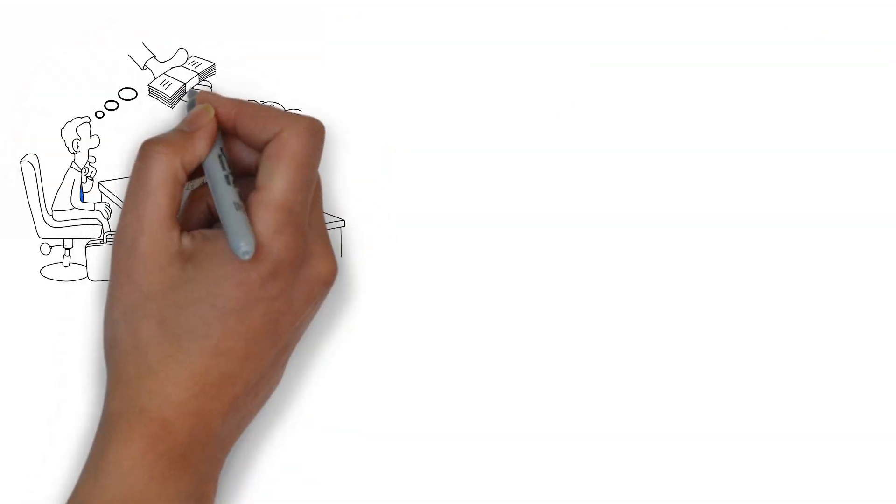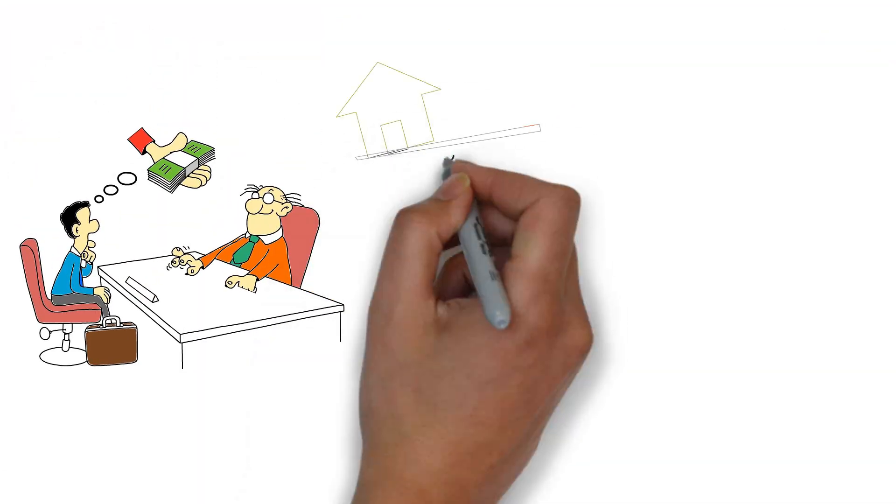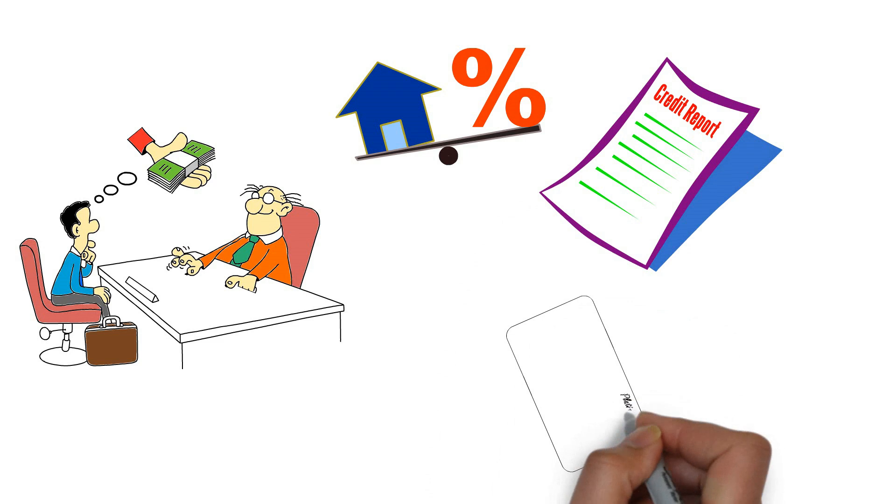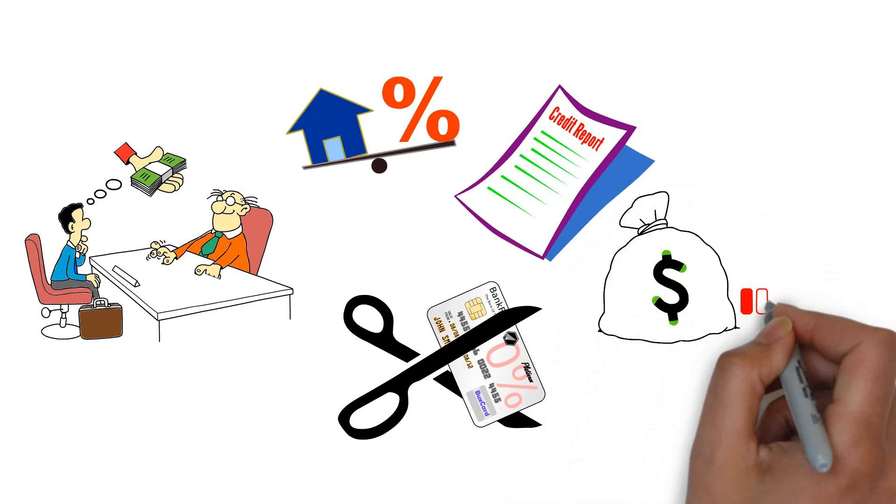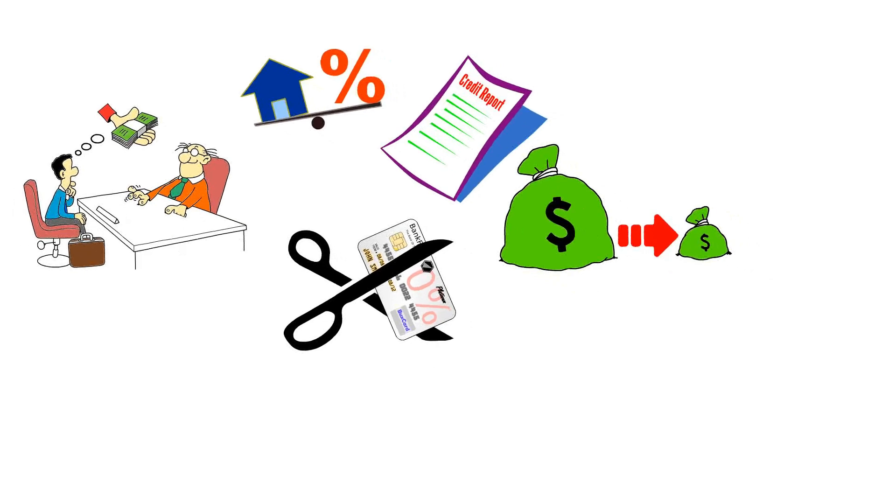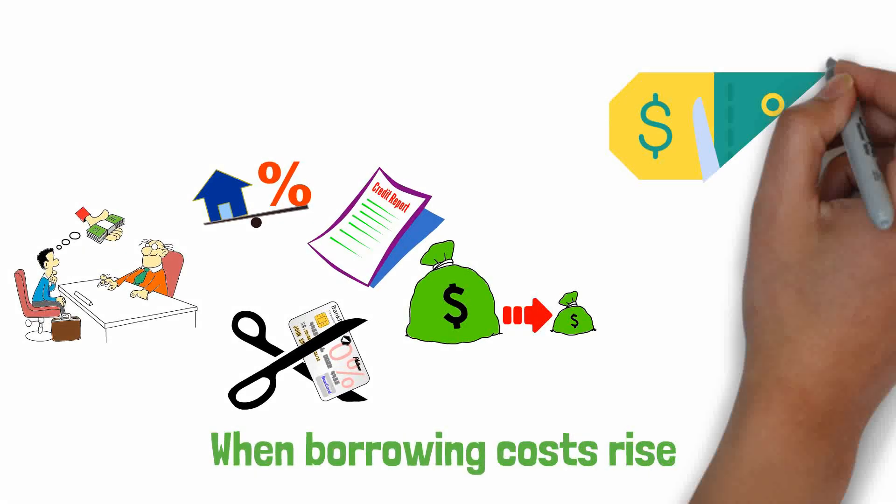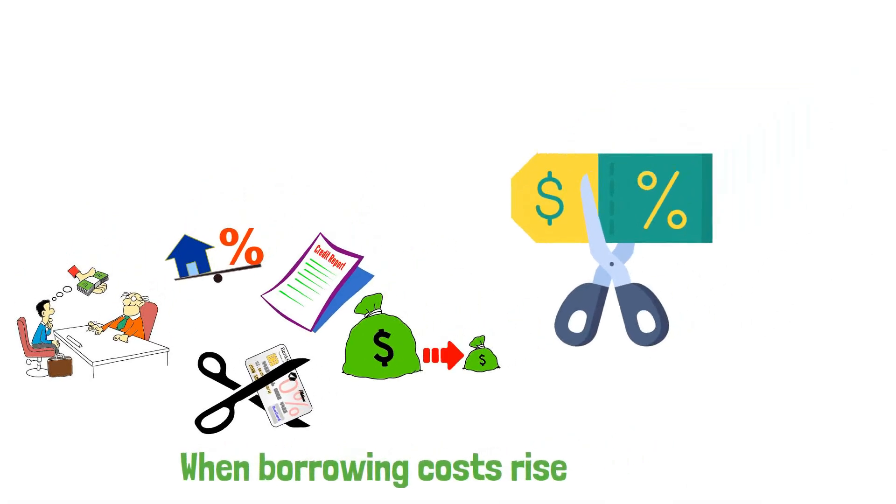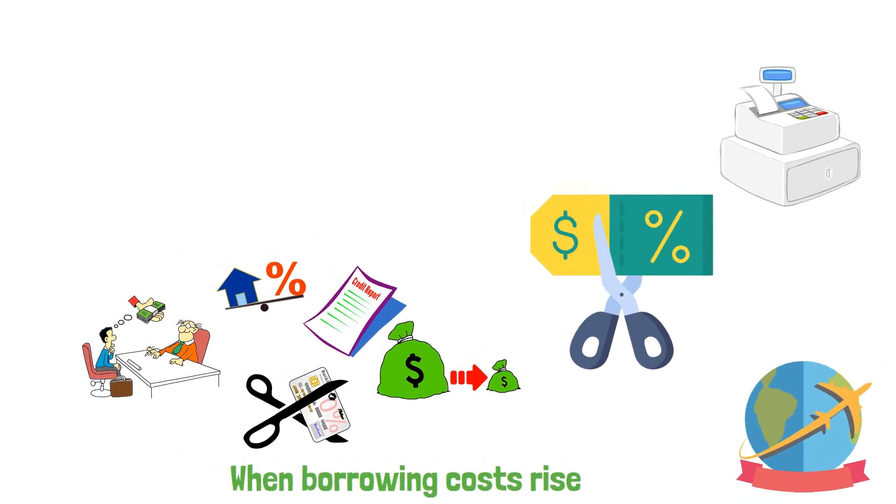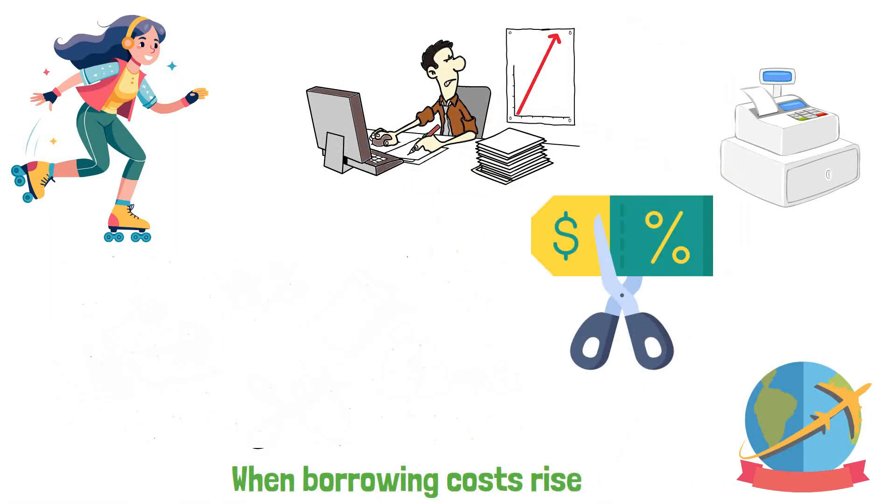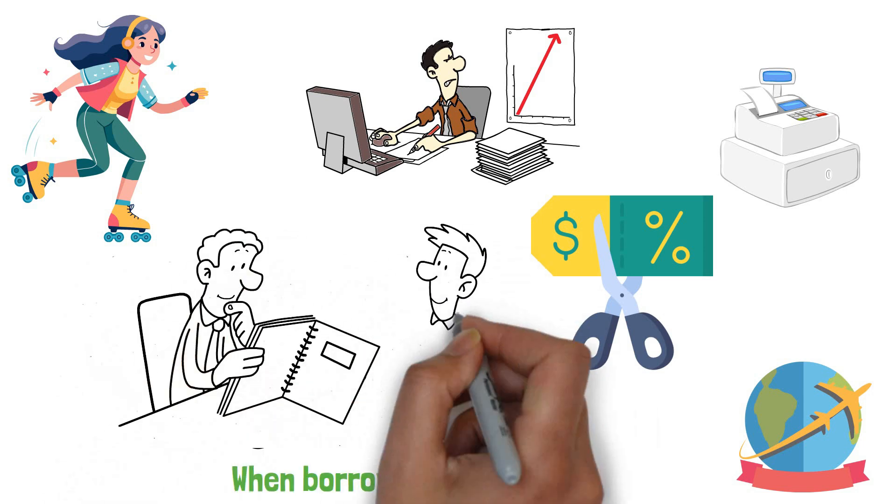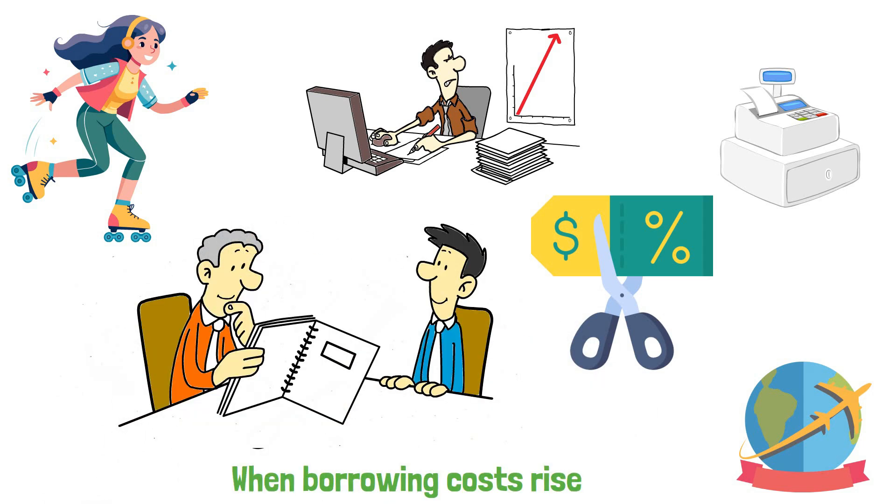Higher interest rates make borrowing more expensive. Mortgages, auto loans, and credit card debt become costlier. This increase in borrowing costs can lead to reduced consumer spending. When borrowing costs rise, consumers may cut back on discretionary spending. Retail, travel, and leisure sectors could be affected.